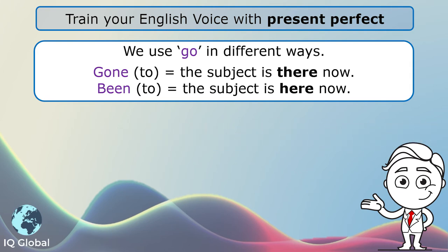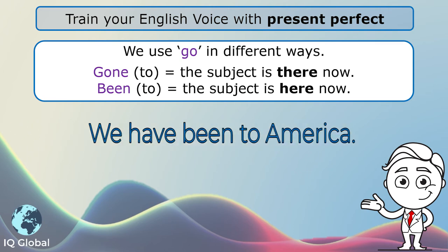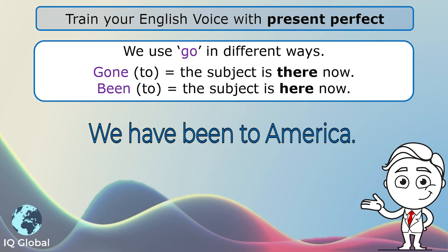Another example: we have been to America. The subject is we, so we use have, and we use the past participle been because we are back at home now — we are here.